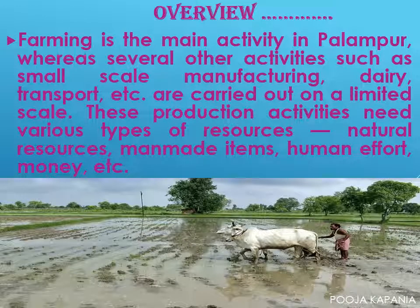Here we are going to study that farming is the main activity in Palampur, whereas several other activities such as small scale manufacturing, dairy, transport etc. are carried out on a limited scale. These production activities need various types of resources — natural resources, man-made resources, human effort, money etc. As we read through the story of Palampur, we will learn how various resources combine to produce the desired goods and services in the village.